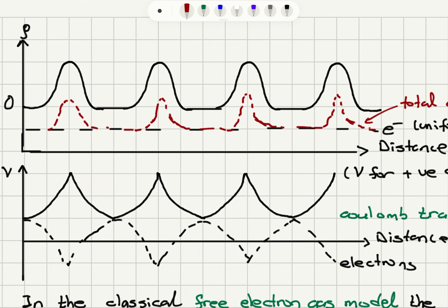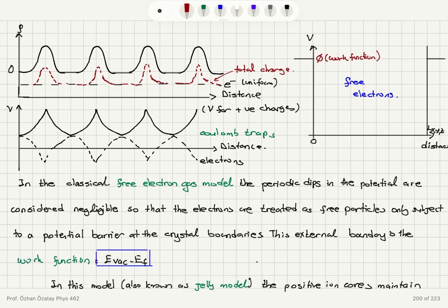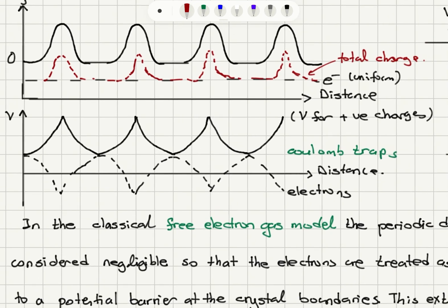We also have periodic peaks in the charge density — positive charges due to the ions. When we add them up, we get the total charge shown by the red dots. We can see there is a net negative charge away from the ion cores and a net positive charge close to the ion cores, so that we maintain the electrical neutrality of the metal.